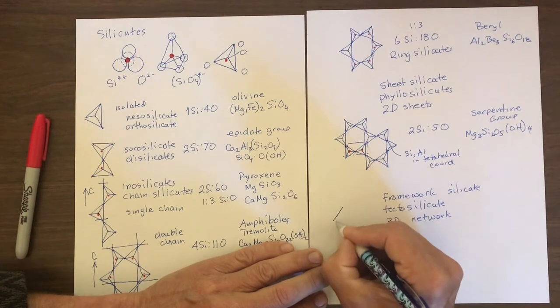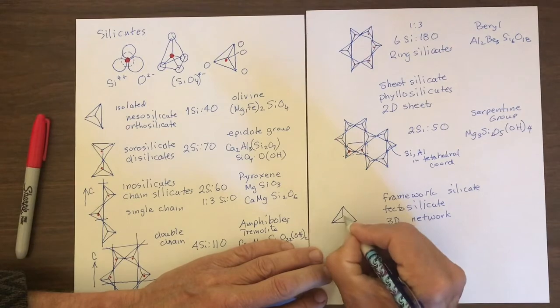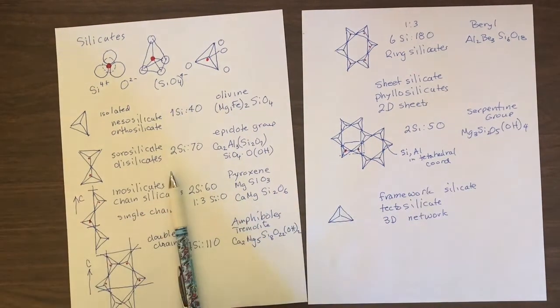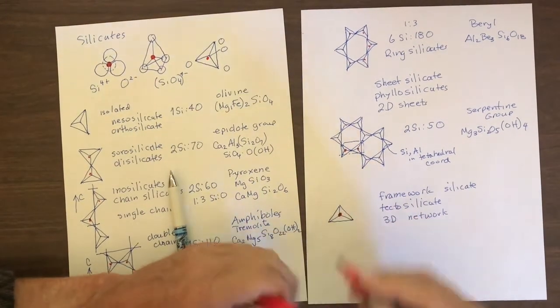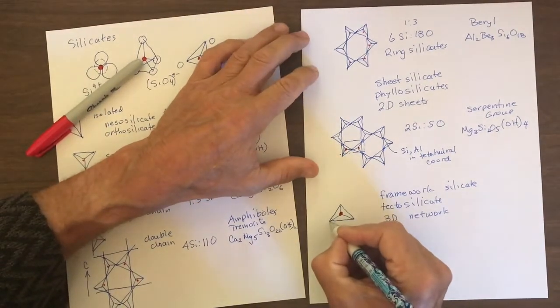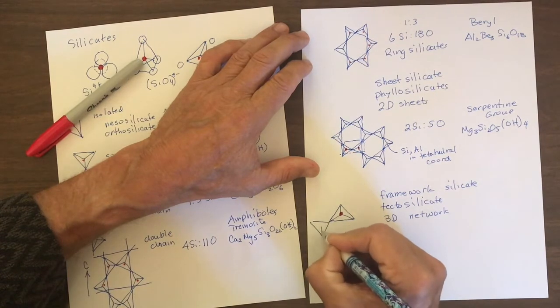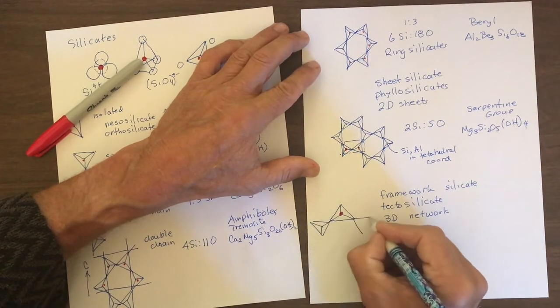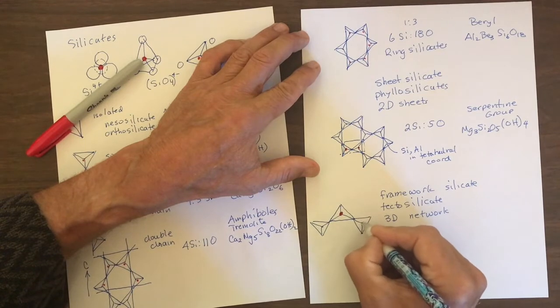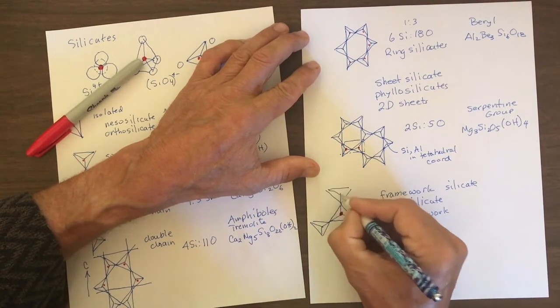Here's one silica tetrahedra, like that, with four oxygens. And then in the center is a silica. Okay, in the center of that. And each one of the oxygens is shared. So this one's shared with another tetrahedra, like that. This is shared out here with another tetrahedra, like that. And this one is shared up here with another tetrahedra.